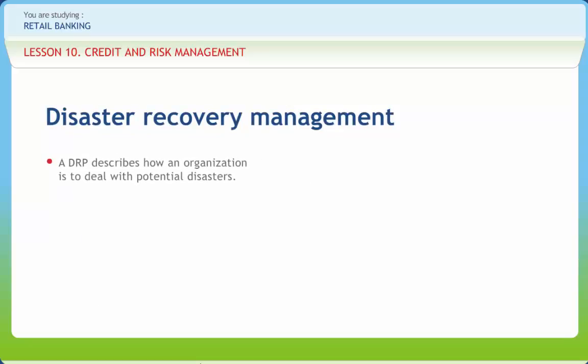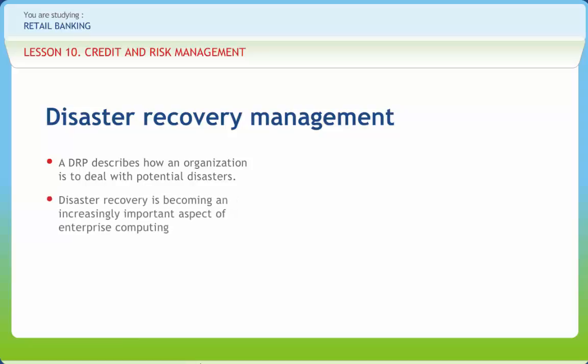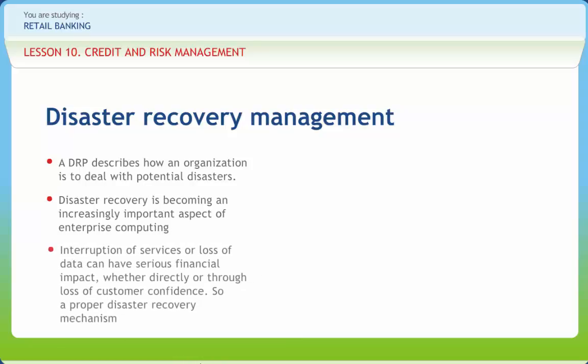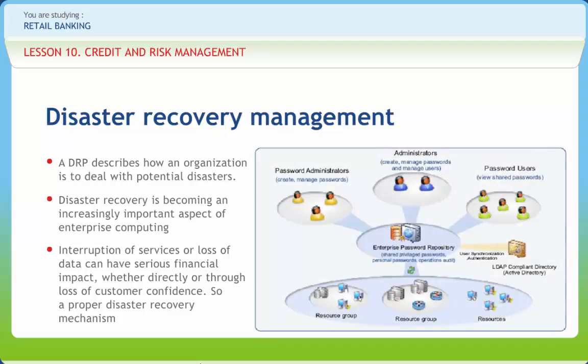A disaster recovery plan describes how an organization is to deal with potential disasters. Just as a disaster is an event that makes the continuation of normal functions impossible, a disaster recovery plan consists of the precautions taken so that the effects of a disaster will be minimized and the organization will be able to either maintain or quickly resume mission-critical functions. Disaster recovery planning typically involves an analysis of business processes and continuity needs, and may also include a significant focus on disaster prevention. It is becoming an increasingly important aspect of enterprise computing and may be developed within an organization or purchased as a software application or service. Interruption of services or loss of data can have serious financial impact, whether directly or through loss of customer confidence, making a proper disaster recovery mechanism essential.